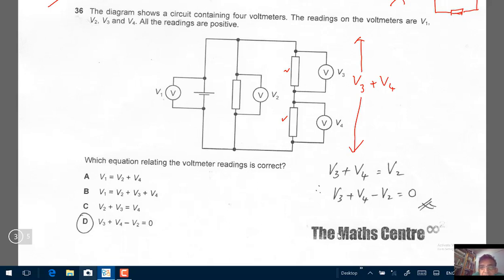So the PD across here, they gave us its V2. They gave us the PD across these two points. The PD across these two points is V3 plus V4. Let's write this AB and let's call this CD. The PD across AB equals the PD across CD.